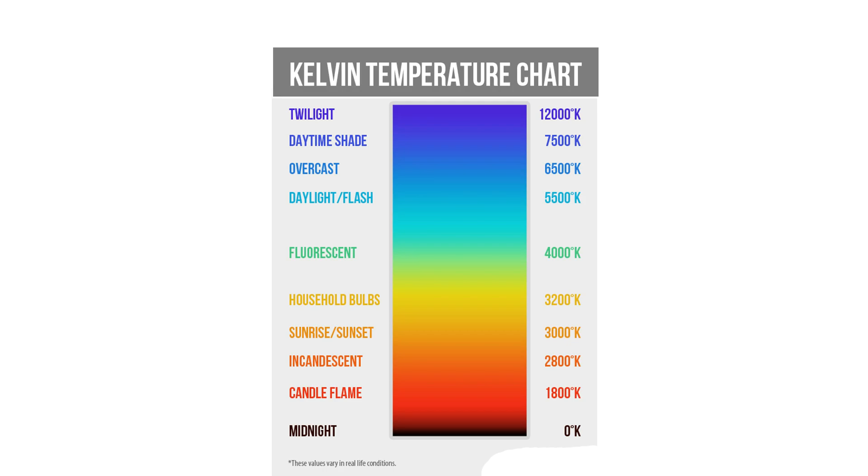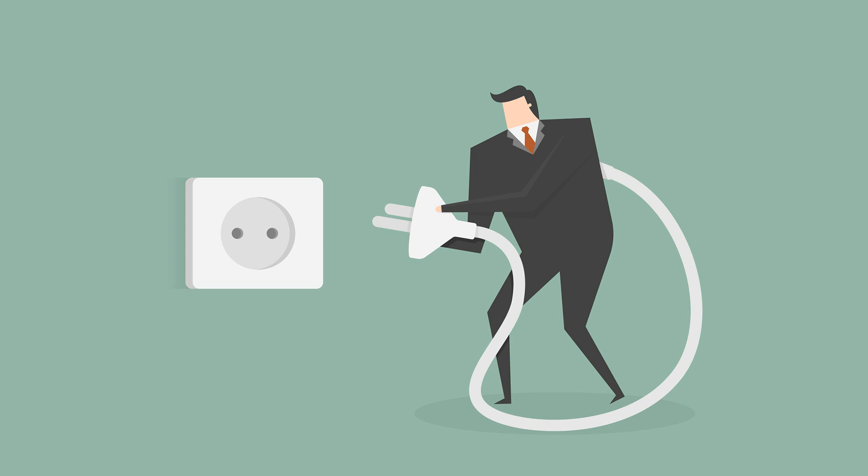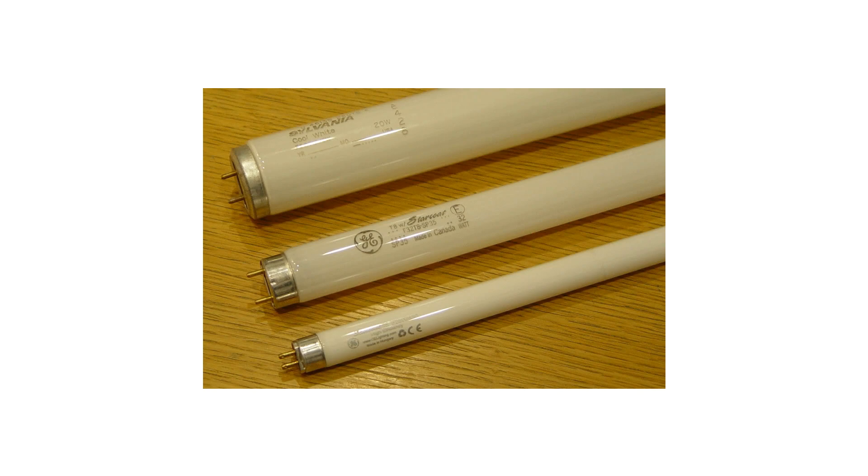The third definition you need to understand is watts, which basically translates to how much energy is consumed or how much power the light pulls from the wall. Watts can be an indication of how bright the light can shine.